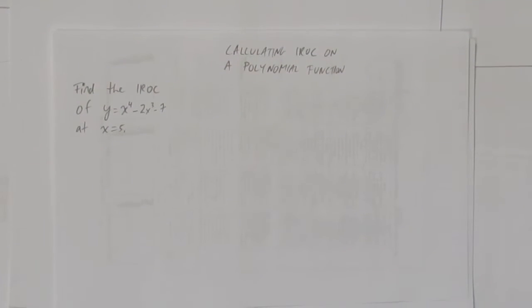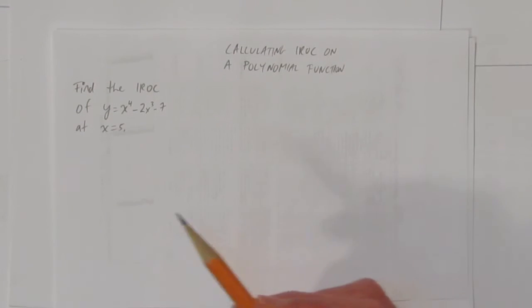So the question says, find the IROC of y equals x to the power 4 minus 2x to the power 3 minus 7 at x equals 5.